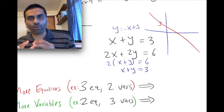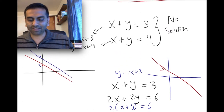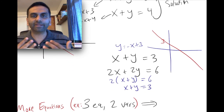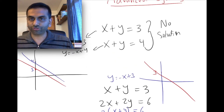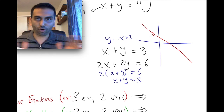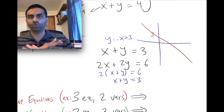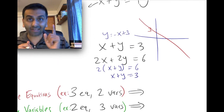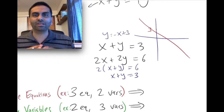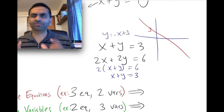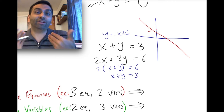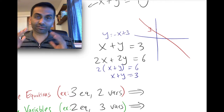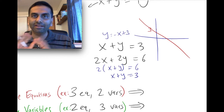Rewriting equations to compare them helps reveal whether it's the same line or the same slope with a different intercept. That tells you whether there's no solution, infinitely many solutions, or in the normal case, exactly one solution. With any system of linear equations there will always be either no solution, exactly one solution, or infinitely many solutions. There's no such thing as exactly two solutions — that could happen with quadratics, but not with linear equations.